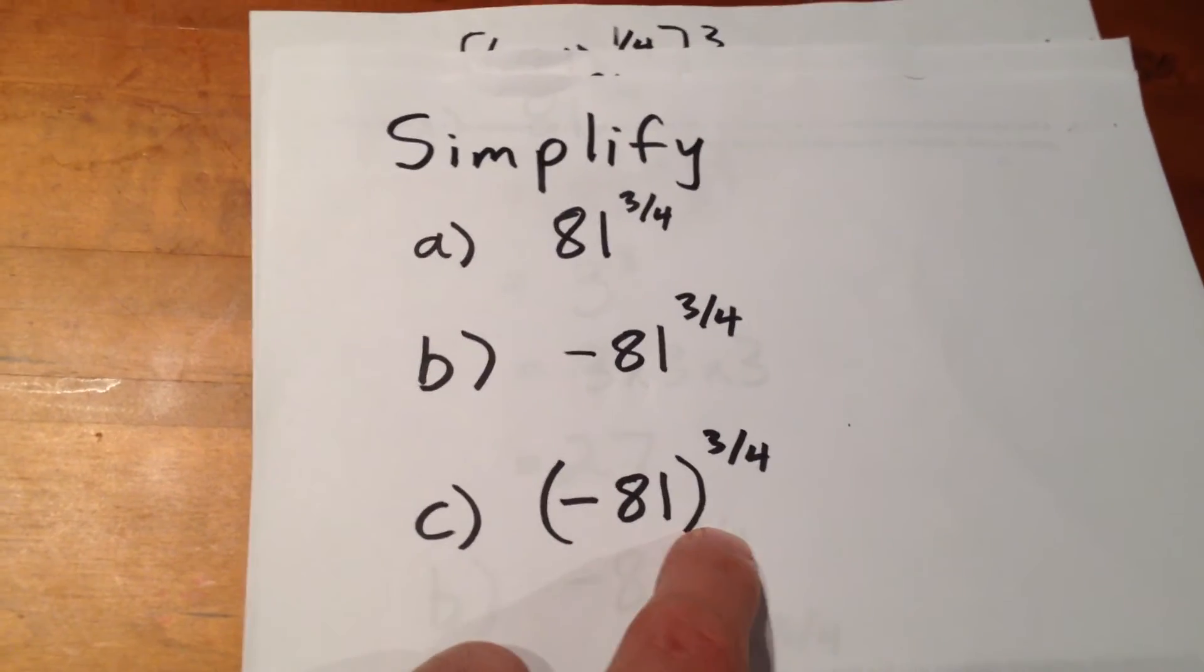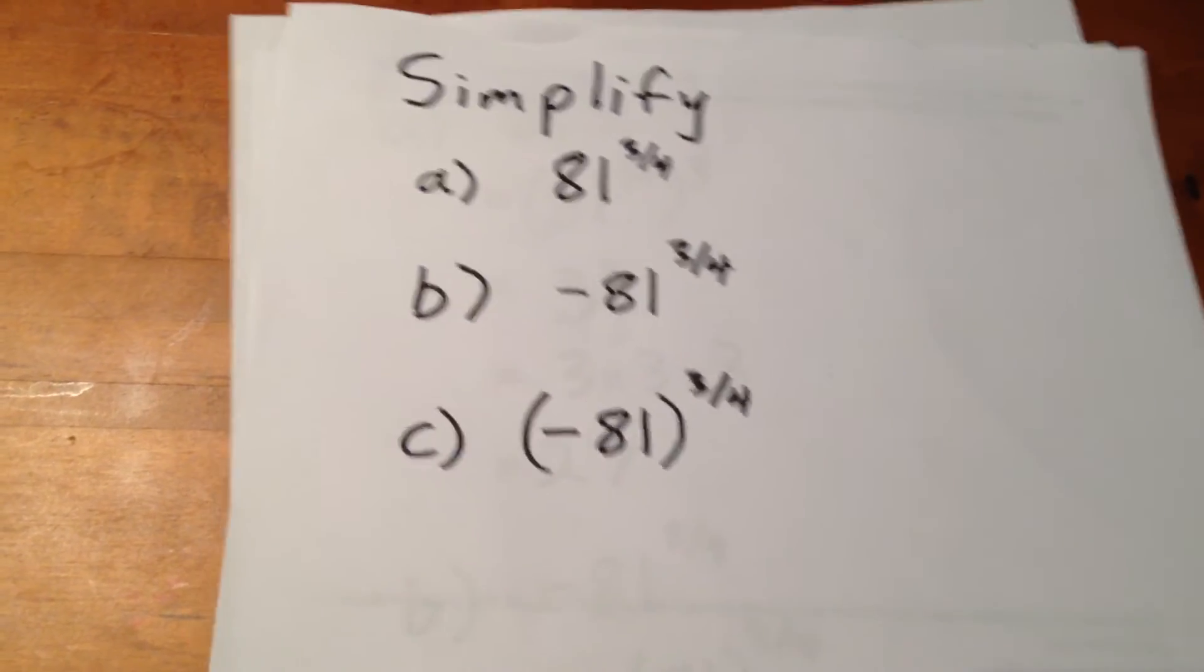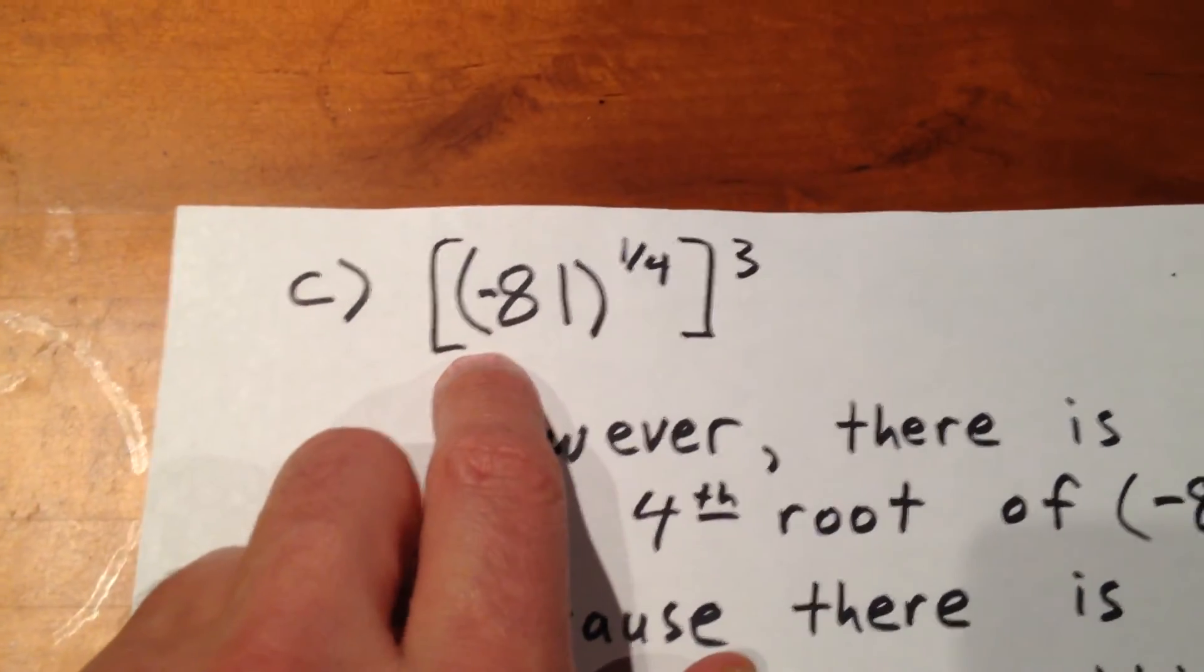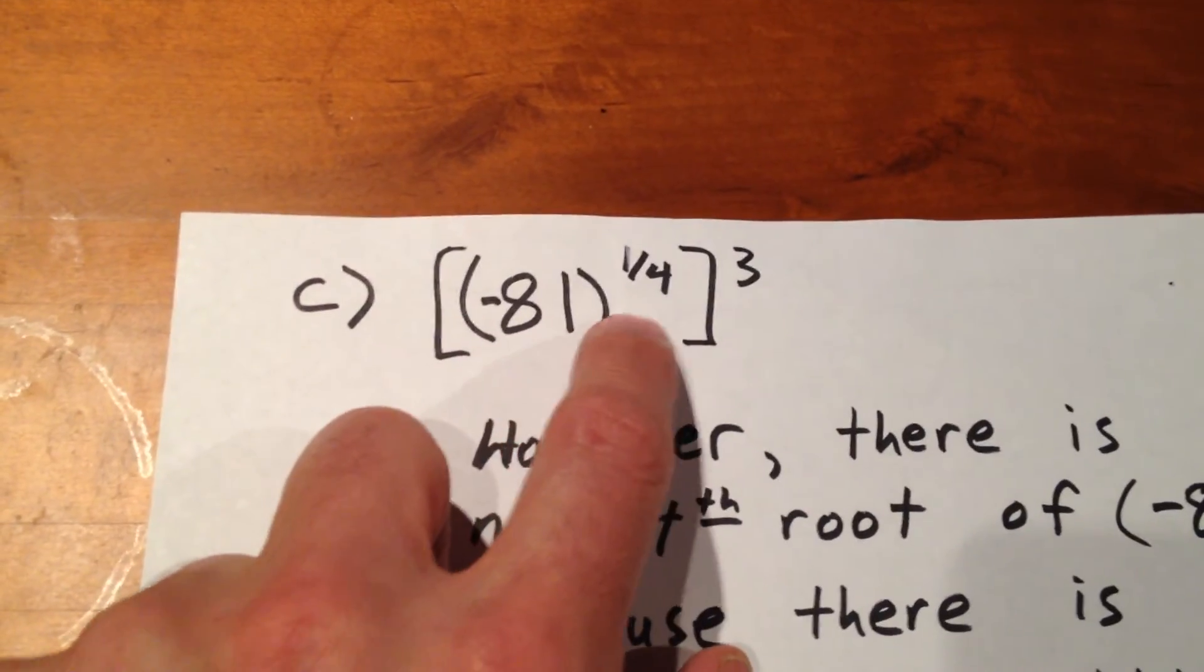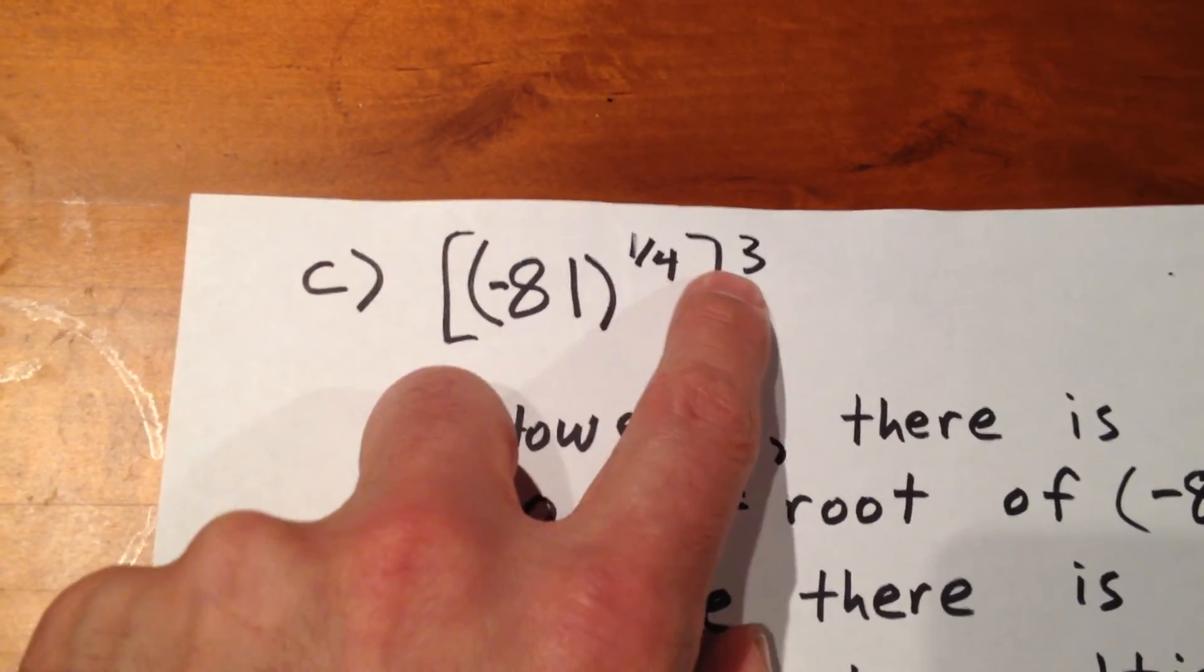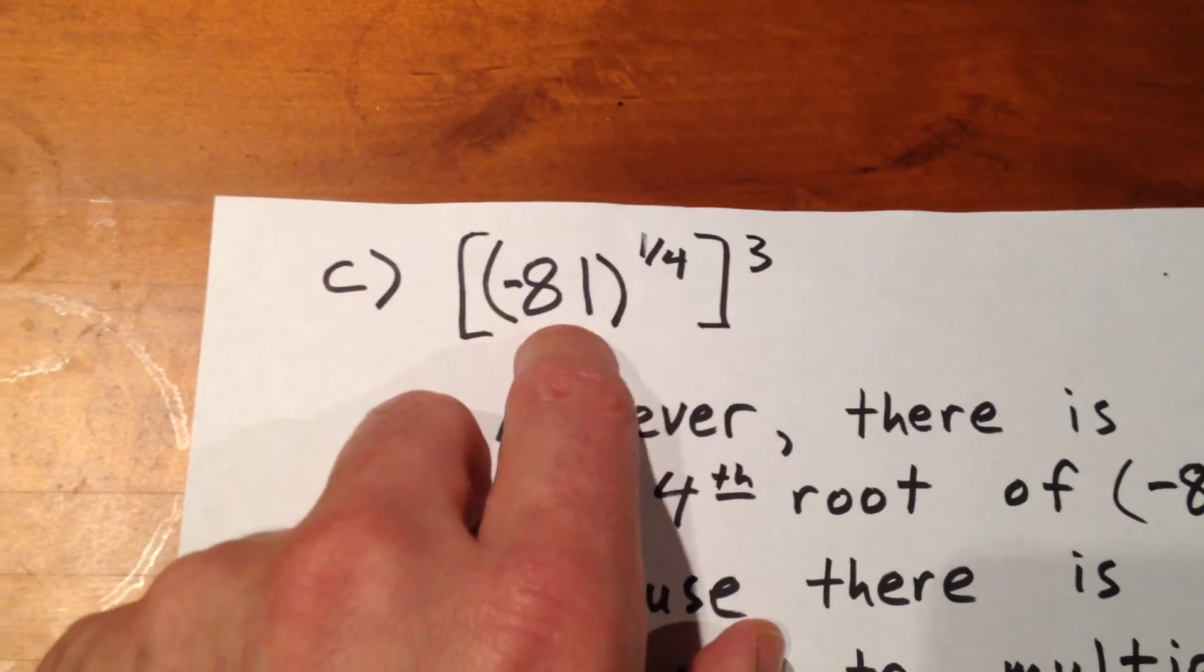So, this first expression can be simplified to this. Negative 81 is the base. We break the exponent of 3 quarters into its factor of 1 quarter and 3. And now, we need to figure out the fourth root of negative 81.